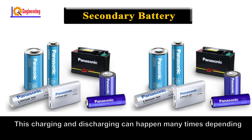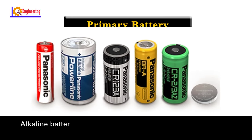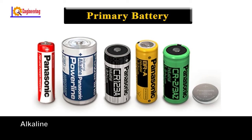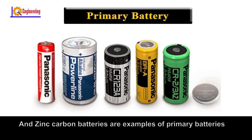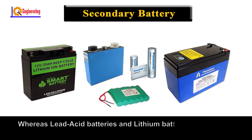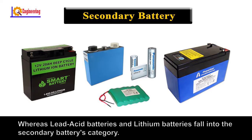Charging and discharging can happen many times depending on the battery type. Alkaline batteries, mercury batteries, silver oxide batteries, and zinc-carbon batteries are examples of primary batteries, whereas solid-acid batteries and lithium batteries fall into the secondary batteries category.